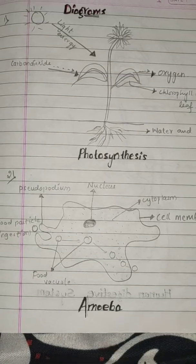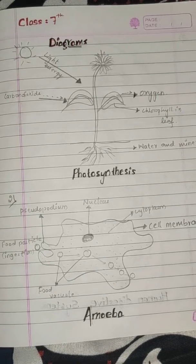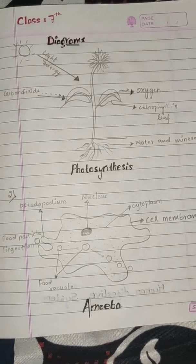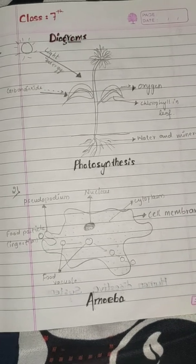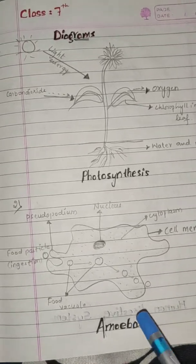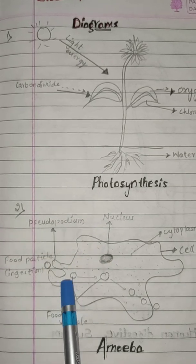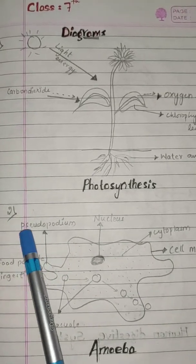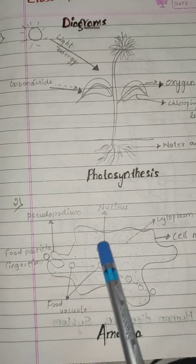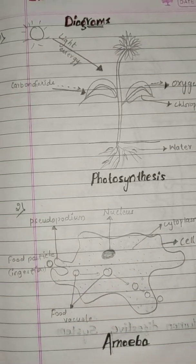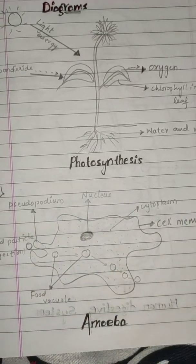Now come to the second diagram, that is amoeba. Amoeba is a microscopic single-celled organism. You cannot see amoeba with your naked eyes; you need a microscope to see this organism. Here we will see the parts of amoeba. This is the nucleus, and this is the pseudopodium. If there is more than one, like here you can see two pseudopodia, then it is called pseudopodia — meaning 'false feet'.